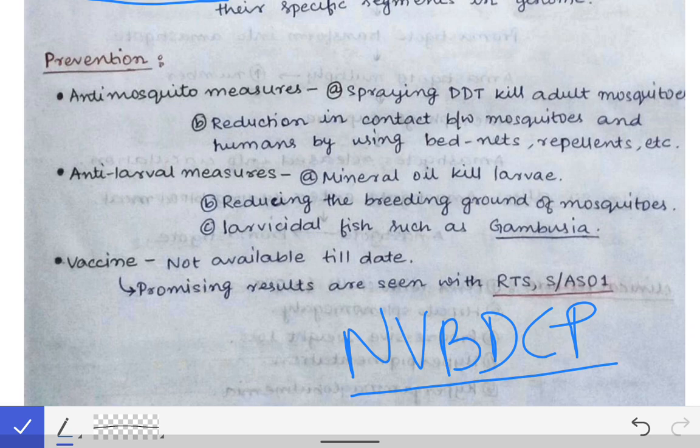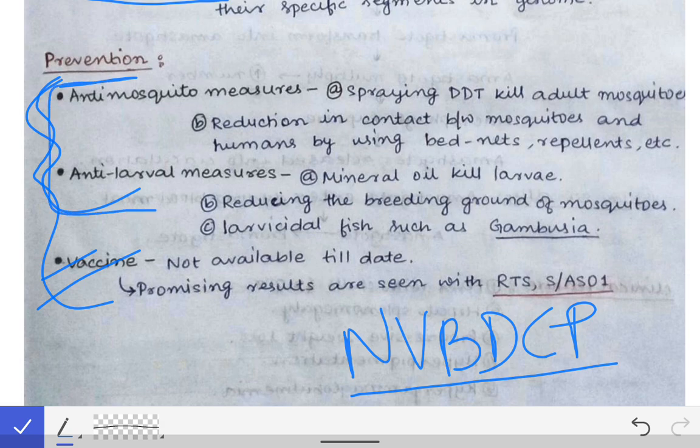Out of these six diseases, five — excluding kala-azar, which is transmitted by sand flies — are transmitted by the bite of mosquitoes. Therefore, mosquito control is the most important method for the prevention and control of these five diseases: malaria, filaria, dengue, chikungunya, and Japanese encephalitis.